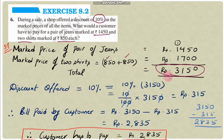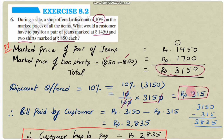Discount = 10% of 3150 = (10 ÷ 100) × 3150 = 315 rupees. Bill paid by customer = 3150 − 315 = 2835 rupees.